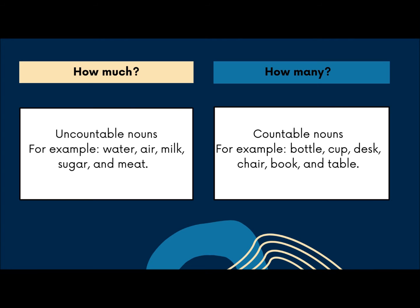On the other hand, how many is used with countable nouns. The countable nouns must be in plural form. Countable nouns are nouns that can be counted as one or more. Some examples of countable nouns are bottle, cup, desk, chair, book, and table.